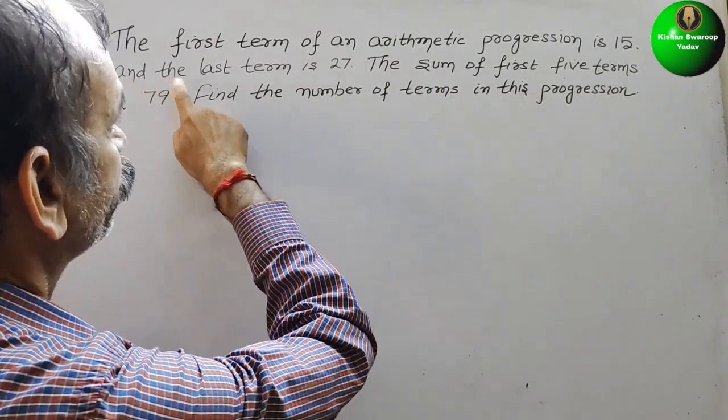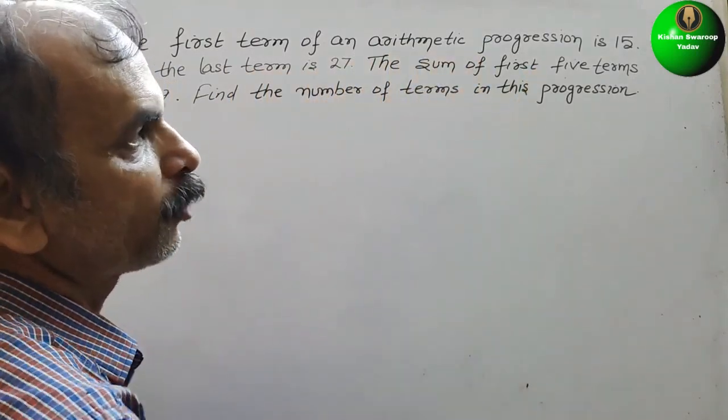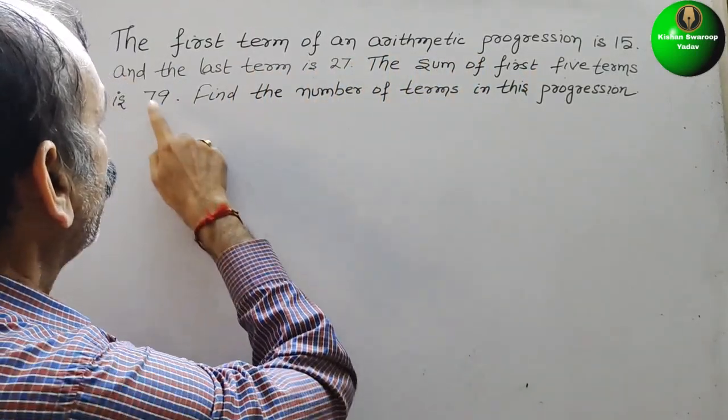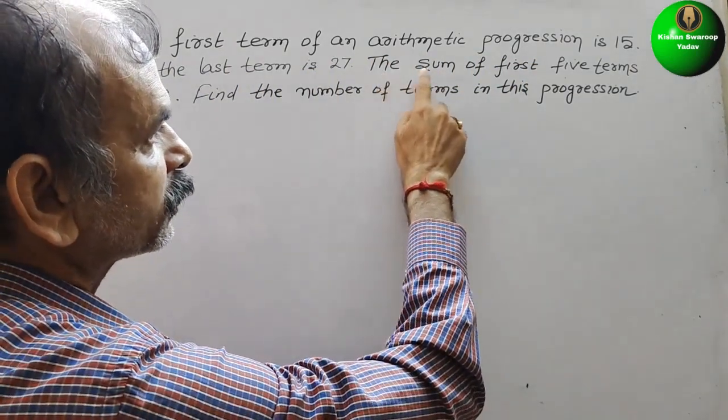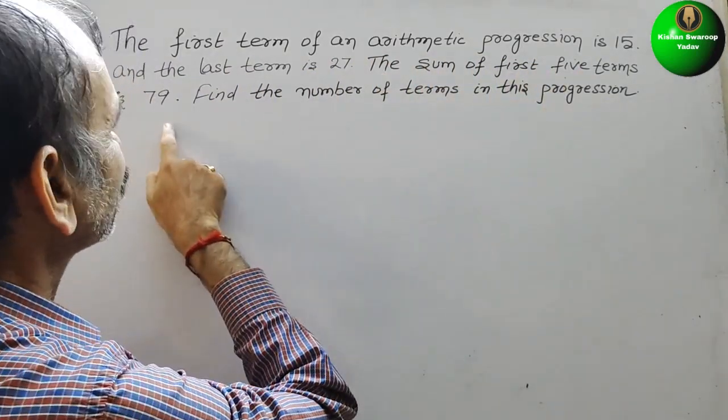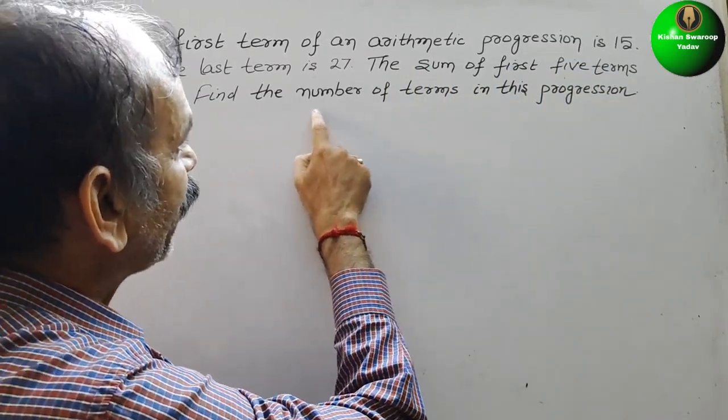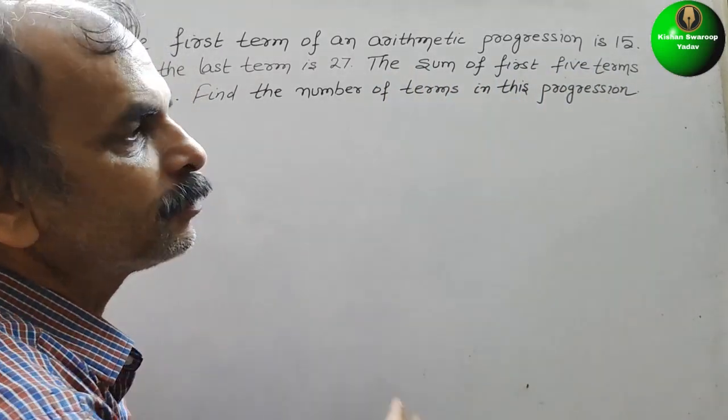Your question is: the first term of an arithmetic progression is 15 and the last term is 27. The sum of the first five terms is 79. Find the number of terms in this progression.